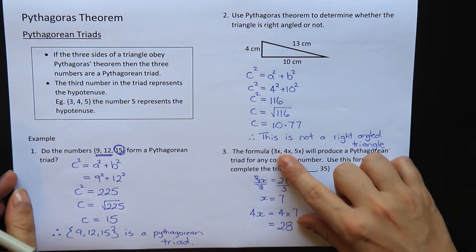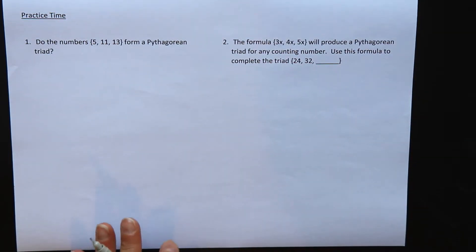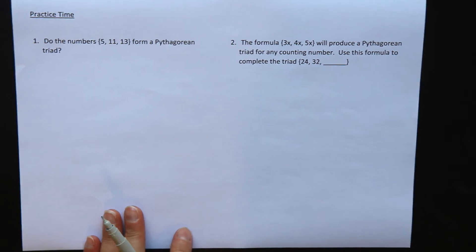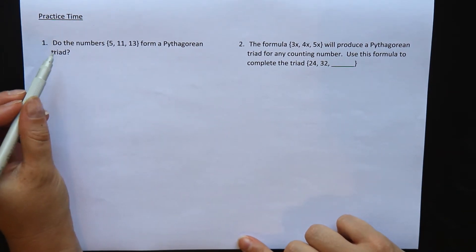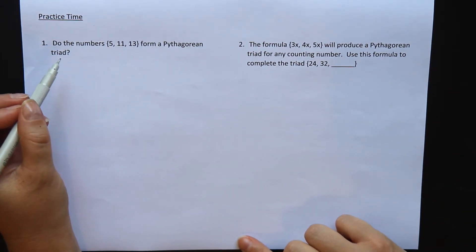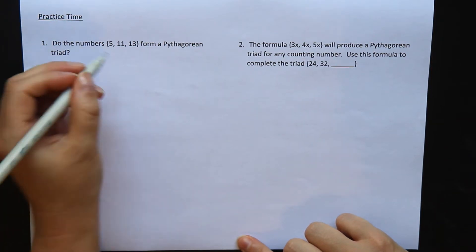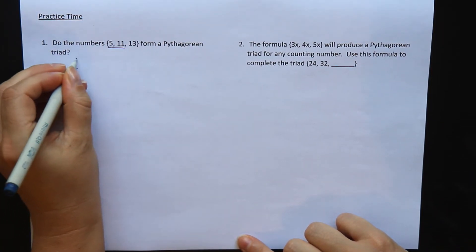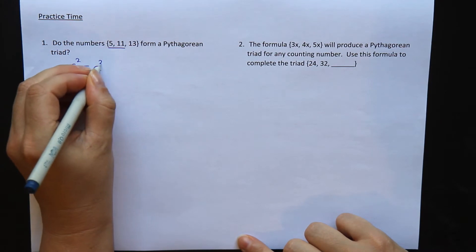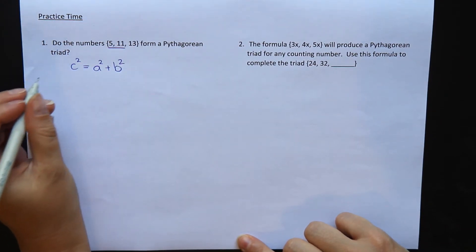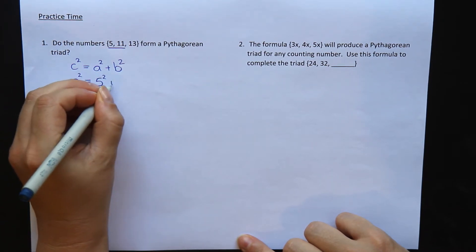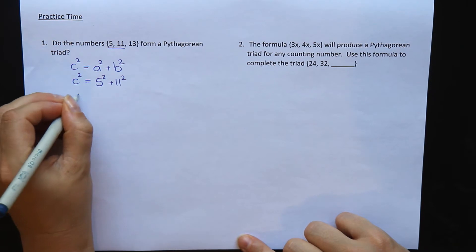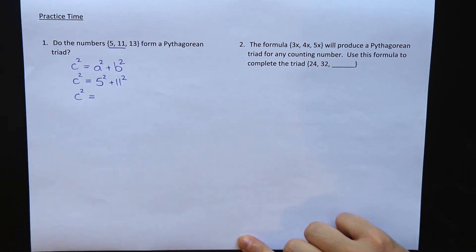Alright, so here is a few short questions for you to have a try. Pause the video, have a go, and then we'll go through the answers together. Question 1. Do the numbers 5, 11 and 13 form a Pythagorean triad? Well, let's take our first two numbers and put them in our formula. C squared equals A squared plus B squared. So C squared equals 5 squared plus 11 squared.